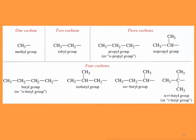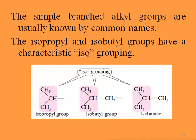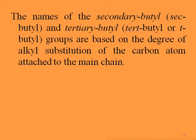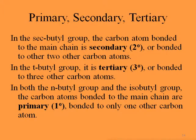The simple branched alkyl groups are usually known by common names. The isopropyl and isobutyl groups have the characteristic iso-grouping — they are branched, so we call them iso-groups. The names secondary butyl (sec-butyl) and tertiary butyl (t-butyl) are based on the degree of alkyl substitution of the carbon atom attached to the main chain. In the secondary butyl group, the carbon bonded to the main chain is secondary — bonded to two other carbon atoms. In the tertiary butyl group, it is tertiary — bonded to three other carbon atoms.